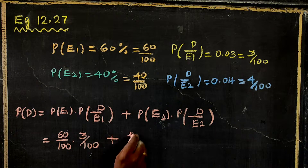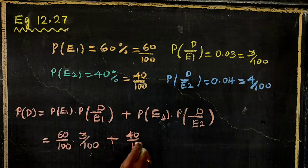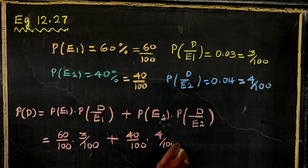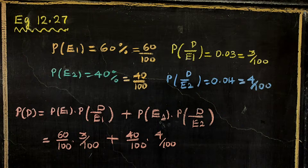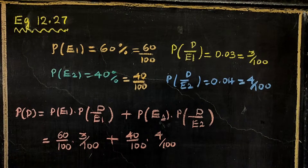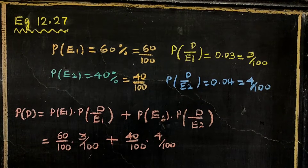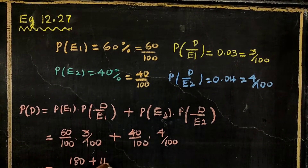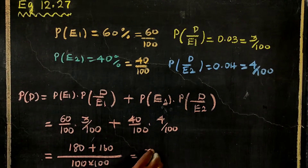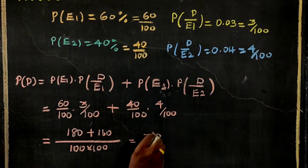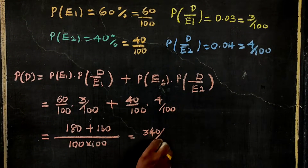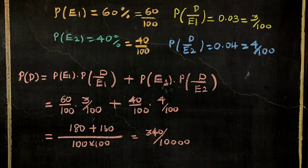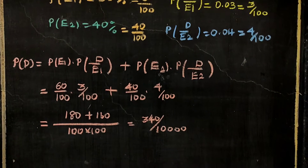So the total probability of a defect is (60/100 × 3/100) plus (40/100 × 4/100), which equals 180 plus 160, giving us 340 by 10,000.